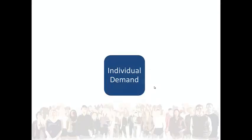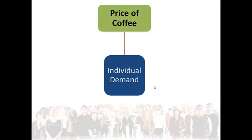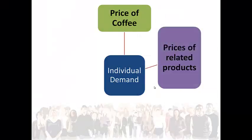So what will determine the quantities of coffee Sally plans to buy? First, the price of coffee — the lower the price of coffee, the larger the quantities of coffee that Sally would want to buy. Then, the price of related goods: complements are goods that are used jointly, such as sugar and milk, which are used in the process of preparing a cup of coffee. Or substitutes — goods that can be used instead. Tea is a substitute, as Sally can drink tea if she cannot afford coffee.